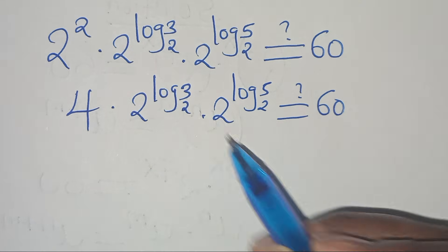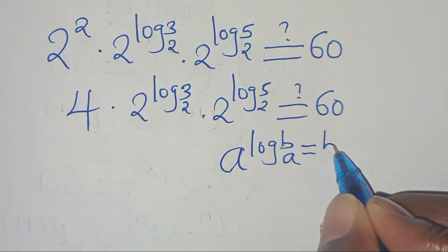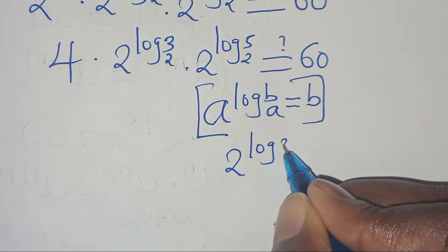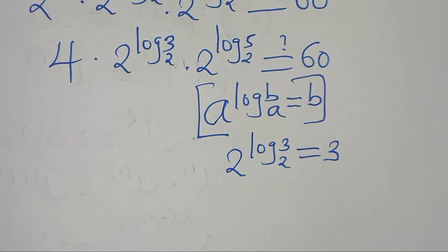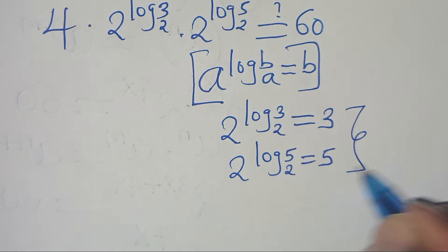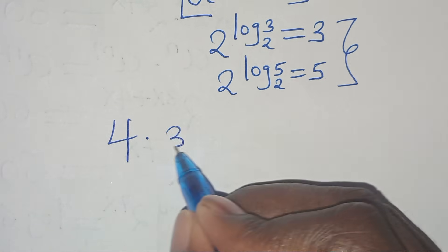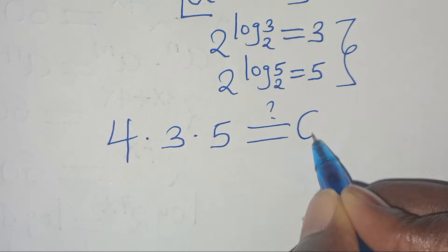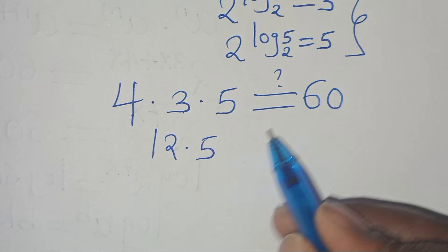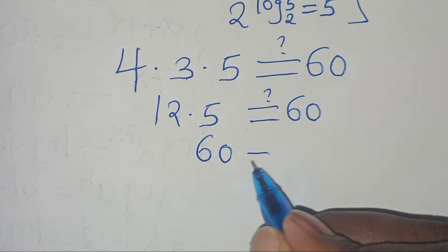Now 2 squared is 4. And 2 to the power of log 3 to base 2 evaluates to 3, and 2 to the power of log 5 to base 2 evaluates to 5. So substituting 3 and 5 back into the equation, we have 4 multiplied by 3 multiplied by 5. So 4 times 3 is 12, times 5 gives us 60, which equals 60. Verified!